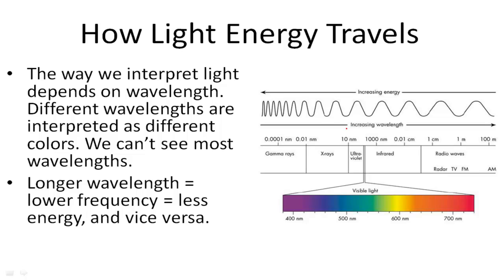The way that we interpret light depends on wavelengths, and different wavelengths are interpreted as different colors. We actually can't see most wavelengths. The longer the wavelength, the lower the frequency.